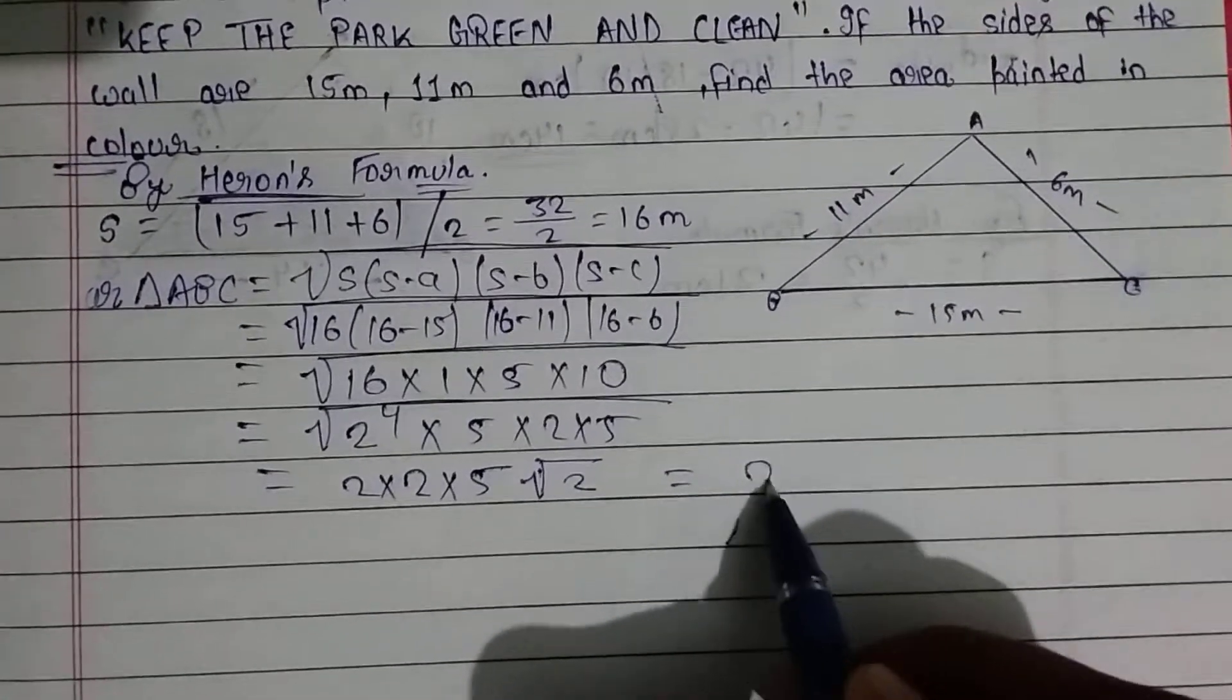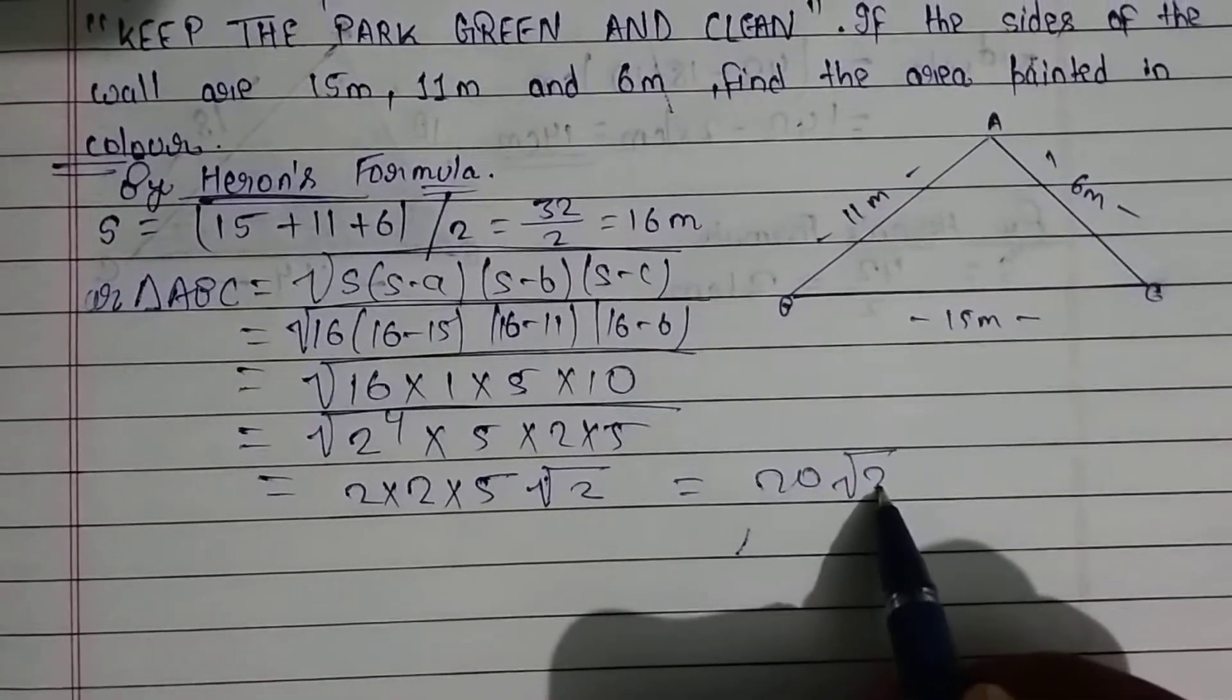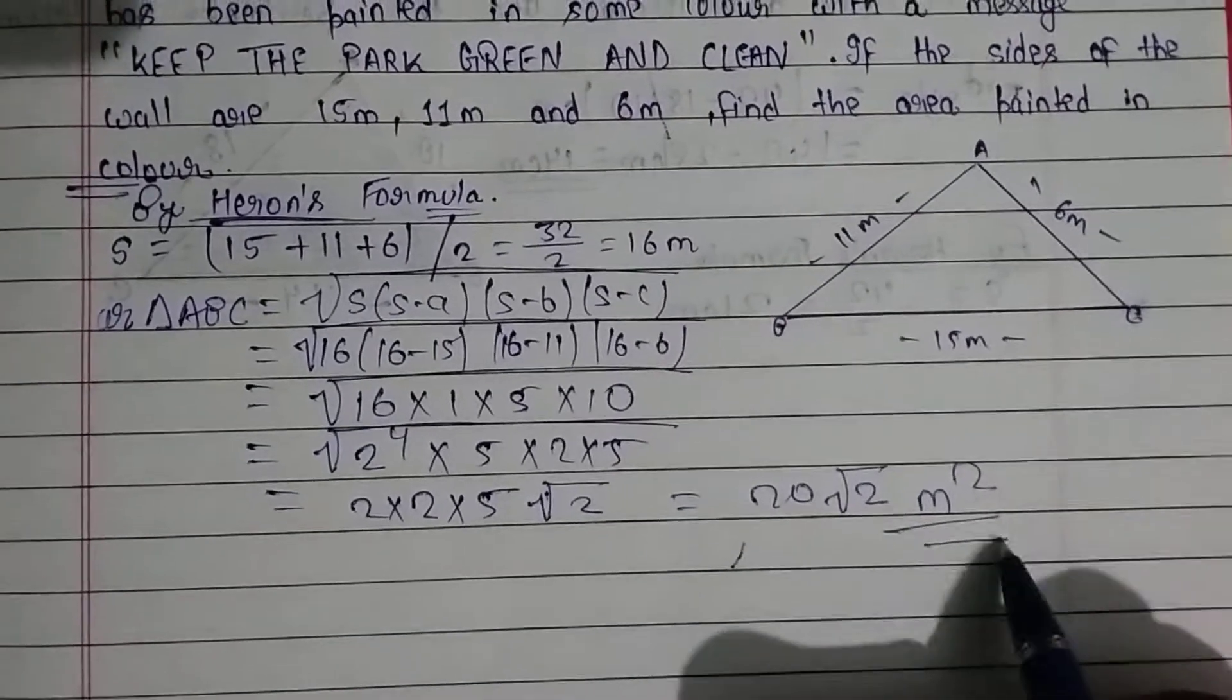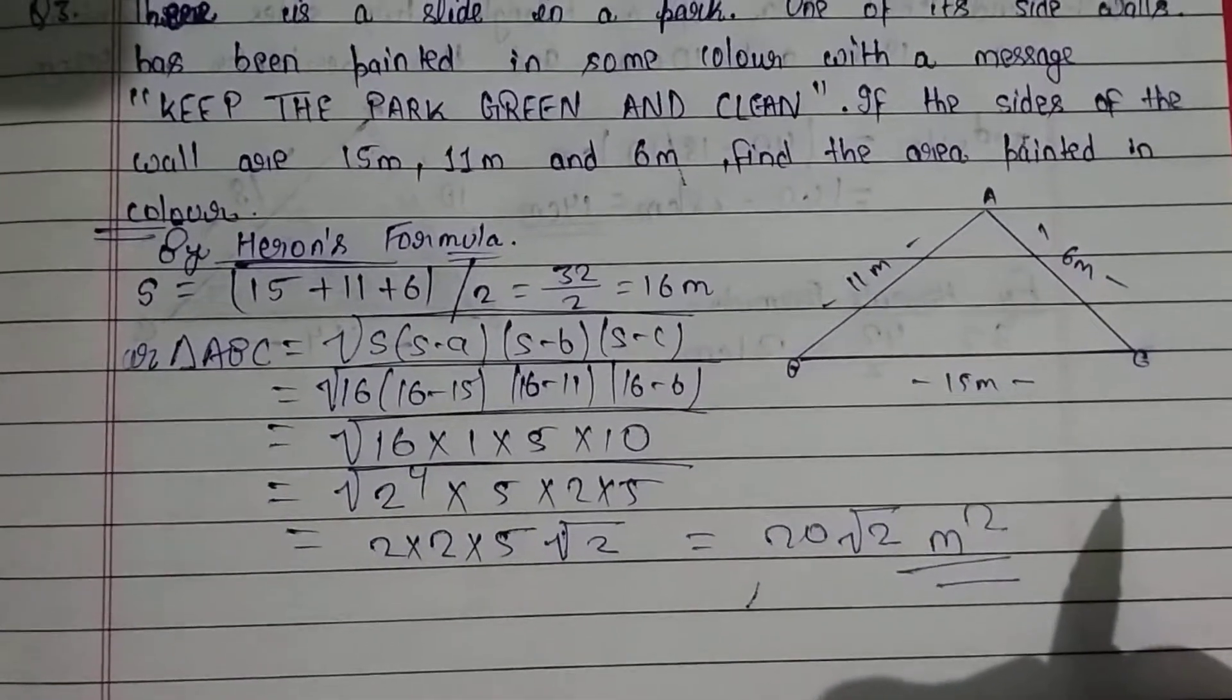The final answer is 20 root 2 square meters. So we have found the area painted on the wall. Thank you.